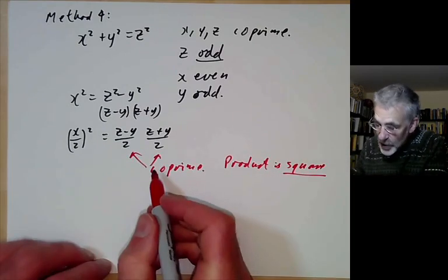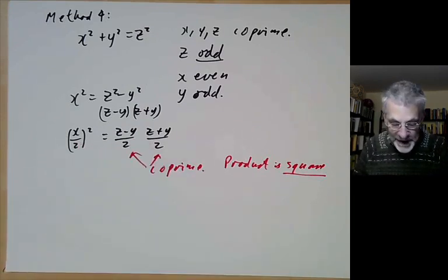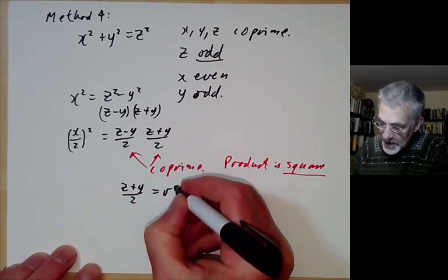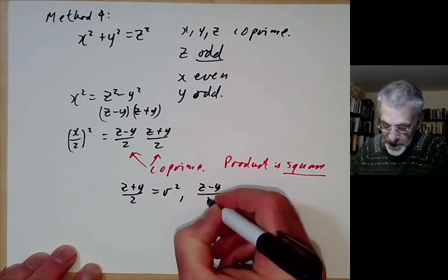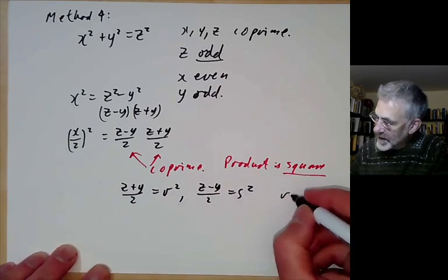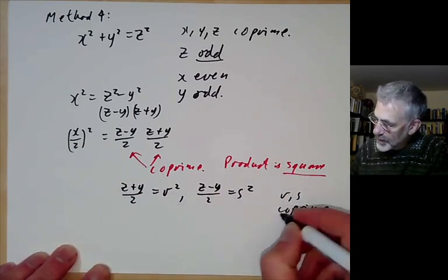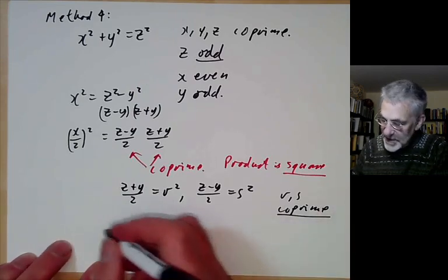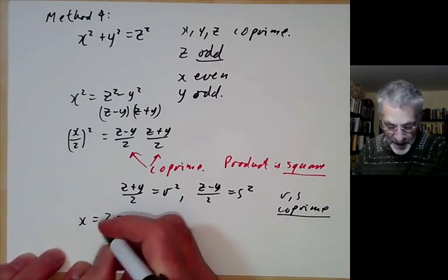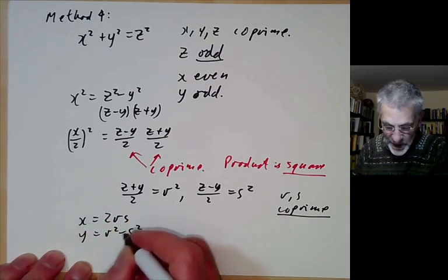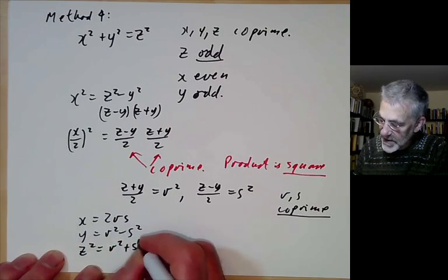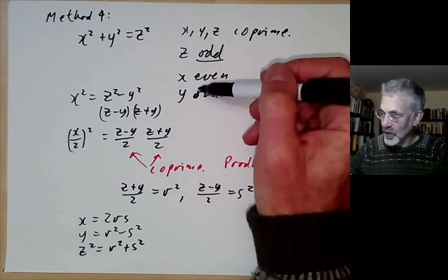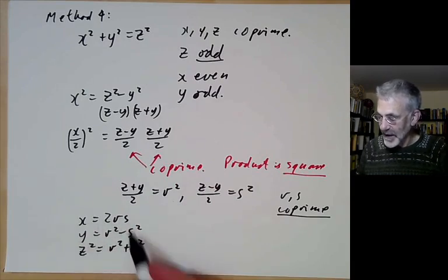If two co-prime numbers have a product that is a square, they must both be squares. So (z plus y)/2 equals r squared and (z minus y)/2 equals s squared, with r and s co-prime. This gives a solution: x equals 2rs, y equals r squared minus s squared, and z equals r squared plus s squared. Any primitive solution satisfying the oddness conditions can be written in this form.